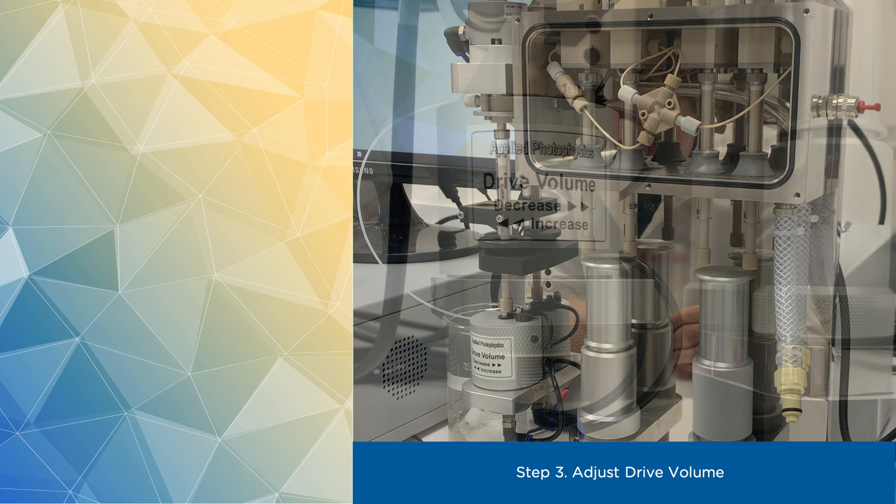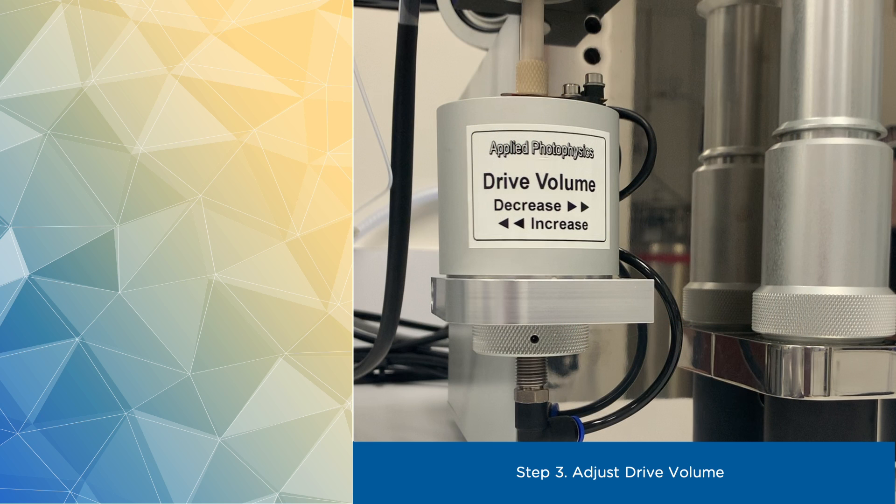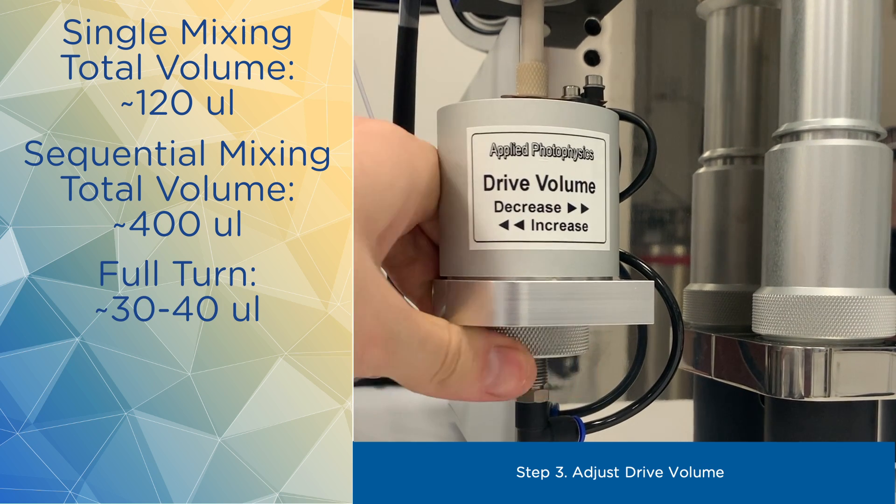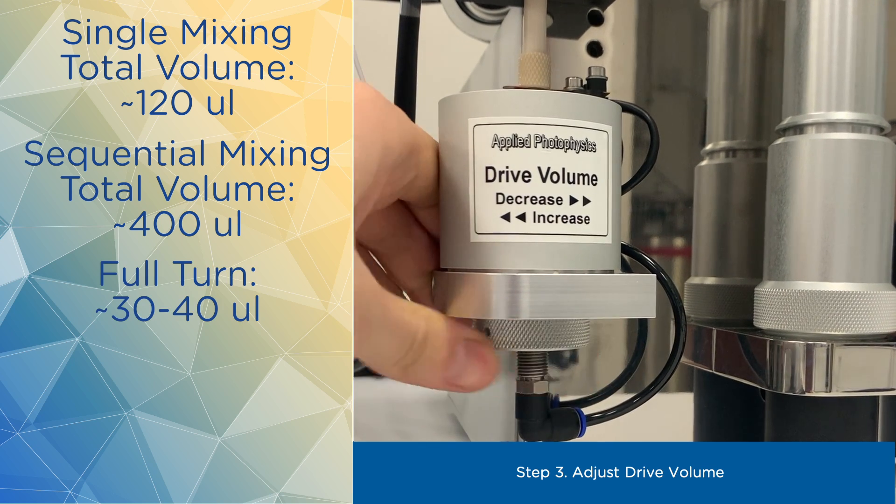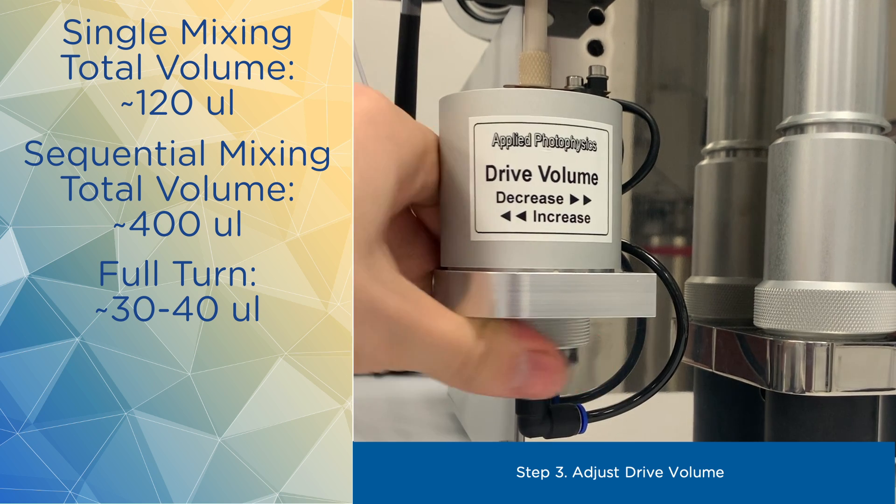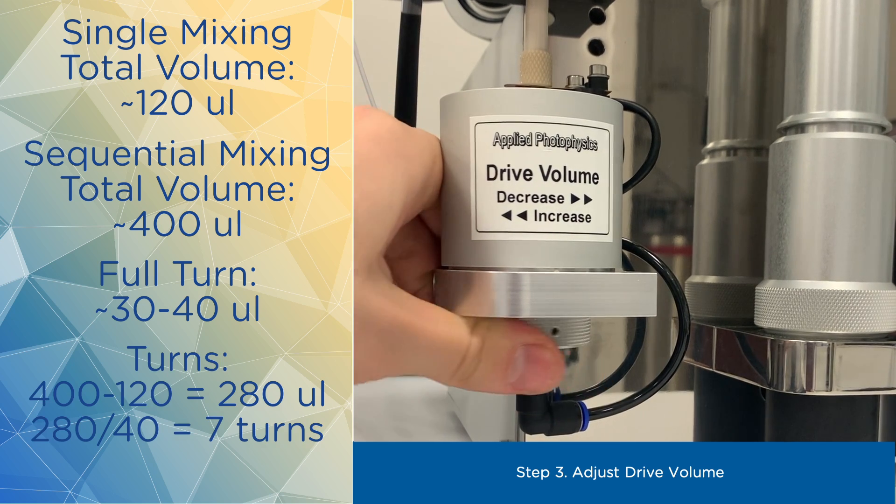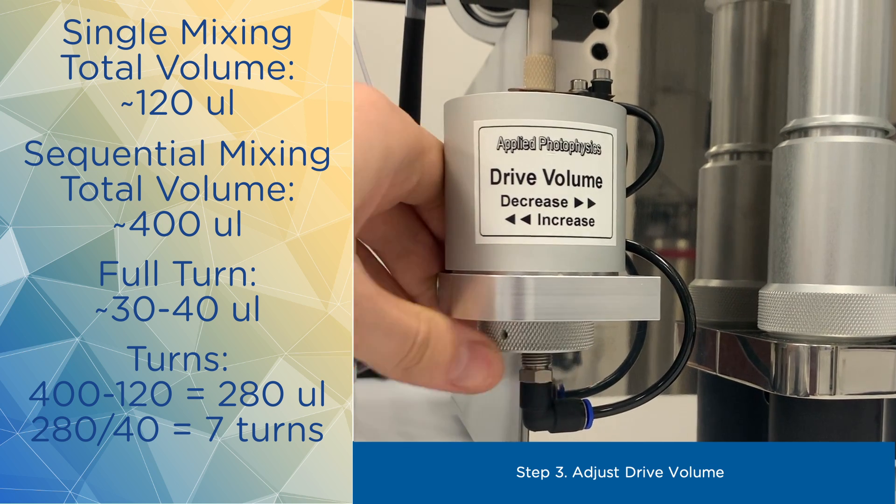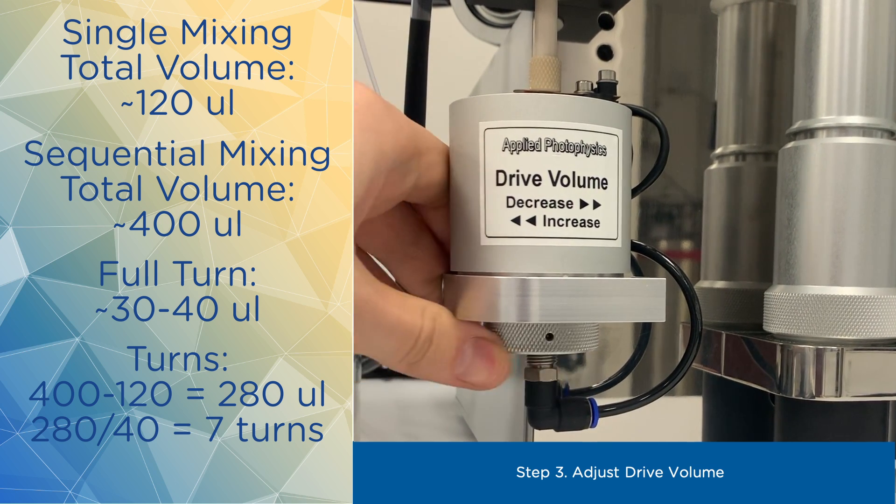Next, we adjust the total volume by turning volume adjuster underneath the stop syringe mechanism in the direction of the arrow. Typical drive volume in a single mixing mode where the drive syringes have a volume of 2.5 mils is around 120 microliters. And for sequential mixing, recommended total drive volume is 400 microliters. A full turn of the volume adjuster corresponds to about 30-40 microliters for a 2.5 mils stop syringe.